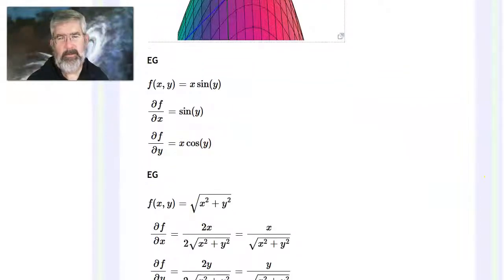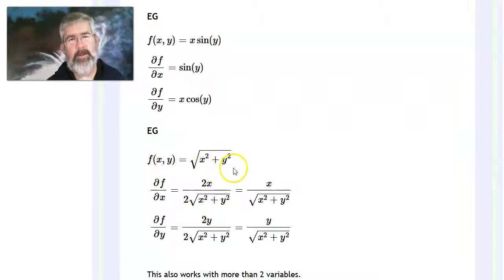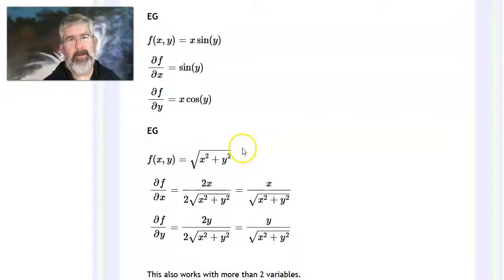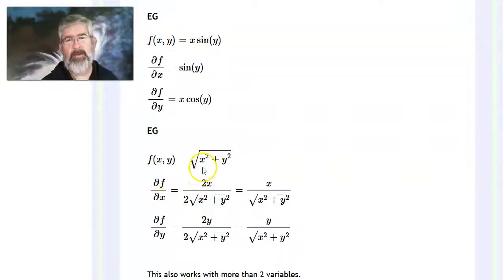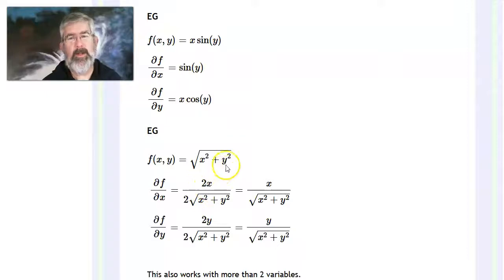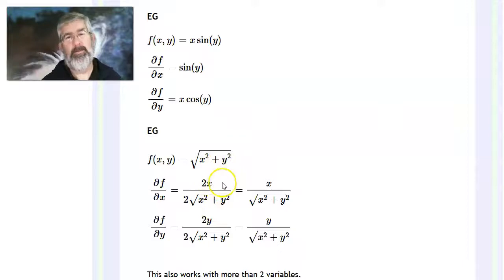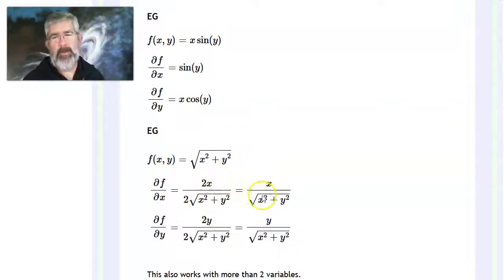Here's another example: f(x,y) = sqrt(x² + y²). For the partial with respect to x, this is stuff raised to the half power, so it's one-half times that stuff to the negative one-half — the square root in the denominator — times the derivative of the inside. Taking the derivative with respect to x: the derivative of x² + y² with respect to x is just 2x, since y² is a constant. So it's 2x on top, and the twos cancel, leaving x over sqrt(x² + y²).